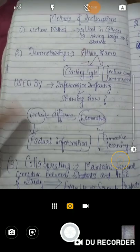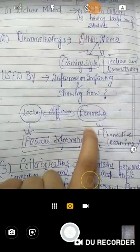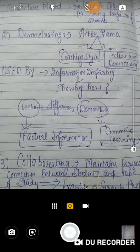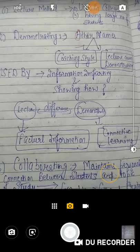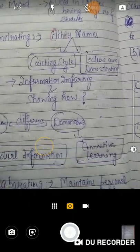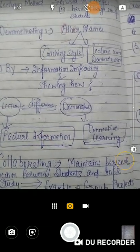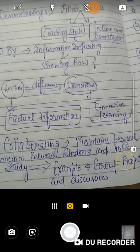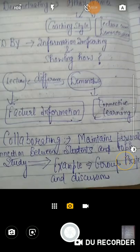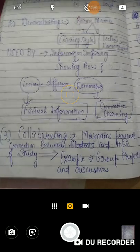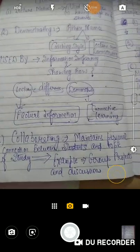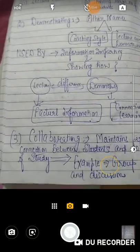यह तो हो गया दोनों methods का मतलब। How lecture method is differ from demonstrate method — याद रखिए, जब भी lecture method होगा, तो उसमें सारी factual information होगी। लेकिन जब demonstration होता है, तो वो connective learning कहलाता है, क्योंकि वो खुद अपनी आँखों के सामने demonstrate होते हुए देख रहे हैं। जैसे hydrogen plus oxygen से water बनता है — demo देखकर खुद समझते हैं। For example washing machine — जैसे आपने नई ली है, तब demonstration हो रही है, उस तरीके से learning होती है। बाकी lecture method classroom teaching में use होता है, factual information के लिए।